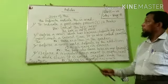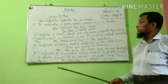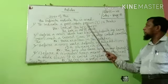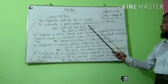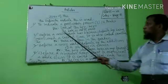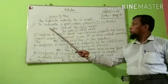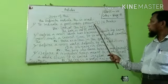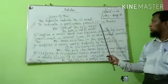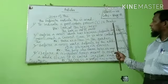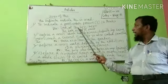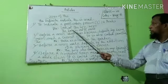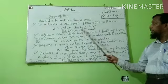Now, uses of THE. The definite article THE is used. Number one: to indicate a particular person or things. Example: Look at the boy. The book is out of print. This is the definite article.